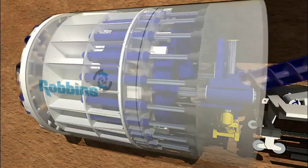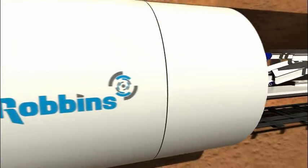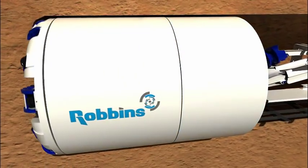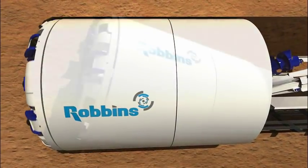The EPB cutter head is followed by a shield body. The shield body may be divided into a front and rear section for when the machine requires articulation during curved tunnel drives.